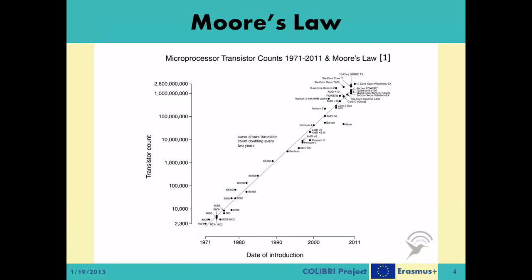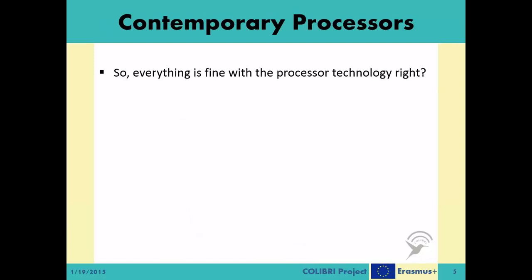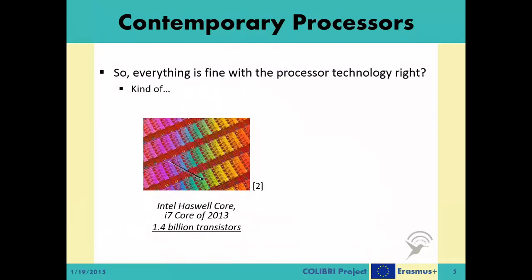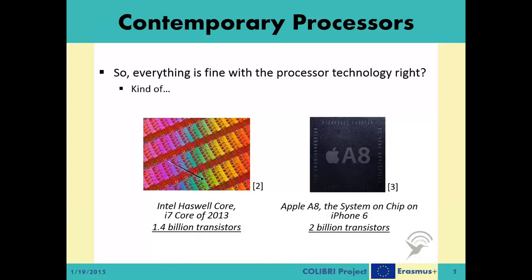From then on, the transistor count of both Intel and AMD processors continued increasing, first surpassing the 10 million barrier in 1998, the 100 million barrier in 2002, and the 1 billion barrier around 2010. Looking at these numbers, everything seems promising on the microprocessor technology front. However, the Intel Haswell core of 2013 has 1.4 billion transistors per core, and the Apple A8 chip in the iPhone 6 has roughly 2 billion transistors. Considering 1 billion transistors per microprocessor in 2010, according to Moore's Law, current microprocessors should be at 4 to 5 billion transistors — but these numbers tell another story altogether.